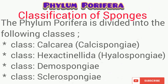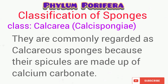The last thing we are going to talk about in this video is the classification of sponges. The phylum Porifera, or sponges, is divided into the following classes: Class Calcarea, Class Hexactinellida, Class Demospongiae, and Class Sclerospongia. The class Calcarea are regarded as calcareous sponges because their spicules are made up of calcium carbonate. They are minute in structure and they can be leuconoid, asconoid, or even syconoid in their water canal system.